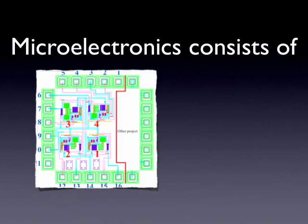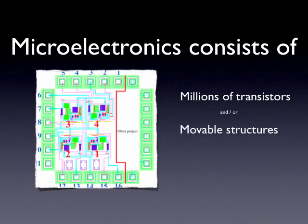So, what is microelectronics? Well, it's a system. This is a picture of a system with a lot of stuff in it — some transistors, it could be millions of them. We could also make movable structures inside, to sense the world around us, for example. And other components make up one big system, which we call a chip.